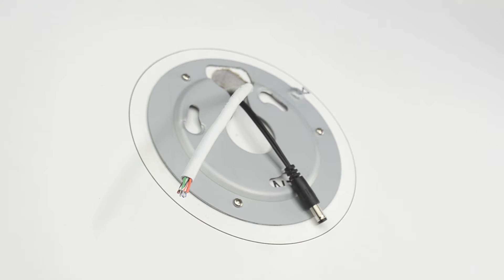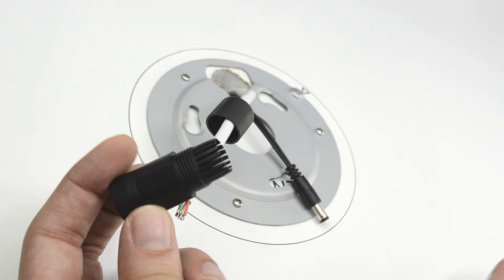After you've run your power and data cables through the wall, you can go ahead and install the weatherproof cover to your data cable.